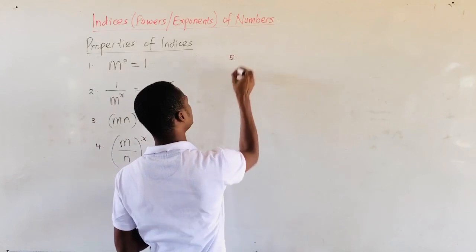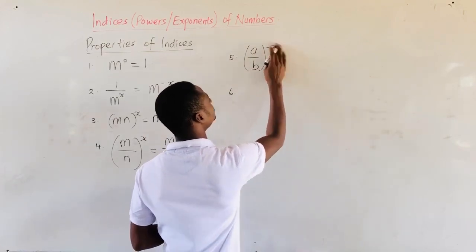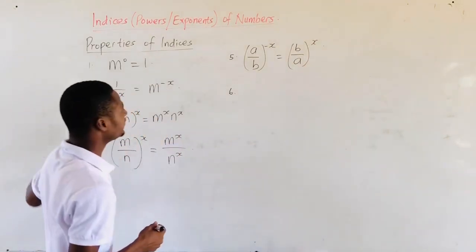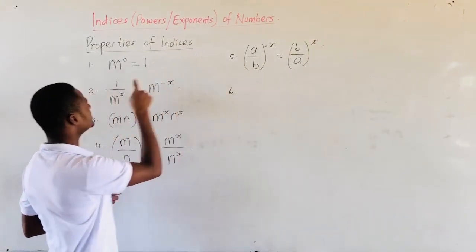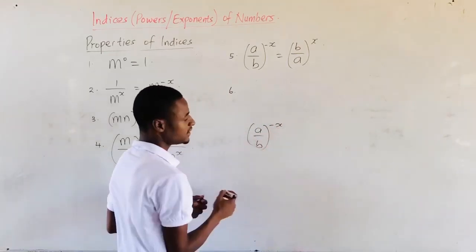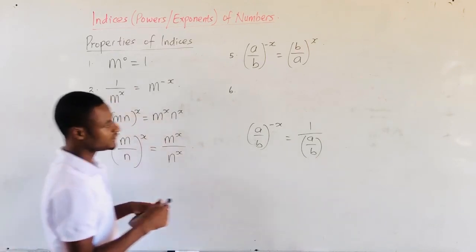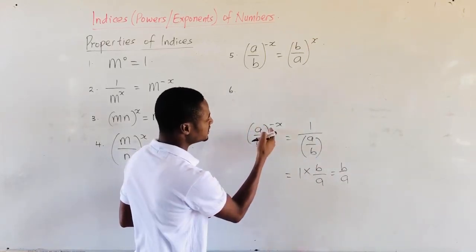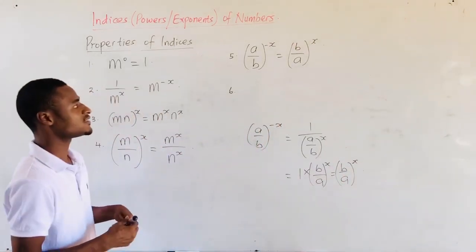The fifth property: we have learned that negative exponents relate to reciprocals. So, if we have A over B raised to the power of negative X, this gives us 1 over A over B, which simplifies to B over A. Therefore, A over B raised to the power negative X equals B over A raised to the power X. This gives us our fifth property.